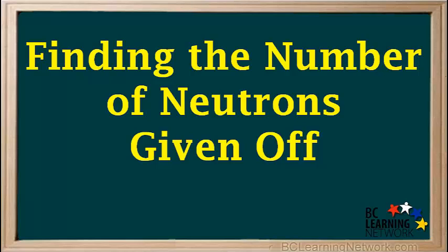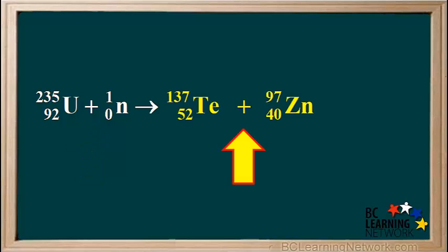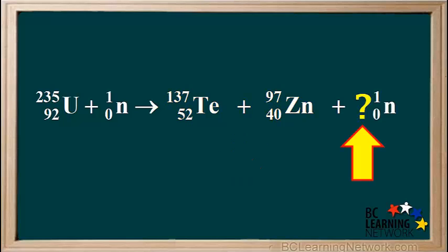Sometimes we are given an equation for a fission reaction with both of the fission products, but not the number of neutrons released. Because neutrons have a zero charge, we can use conservation of mass to help us find this. Let's do an example. Uranium-235 captures a neutron and undergoes a fission reaction to produce fission products tellurium-137 and zinc-97, and we are asked to determine the number of neutrons in this reaction.